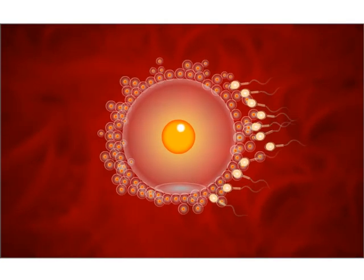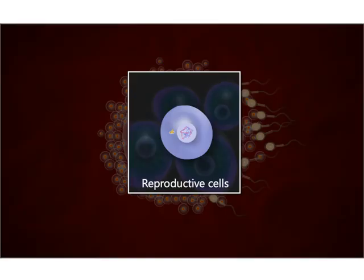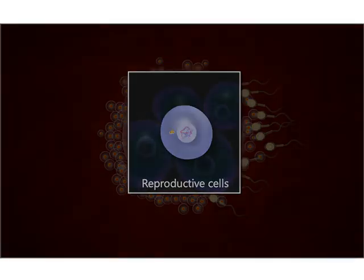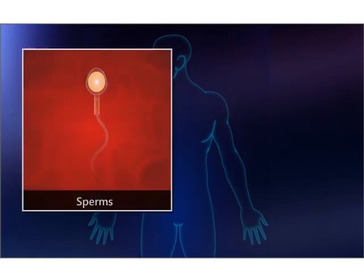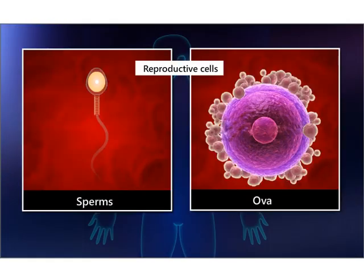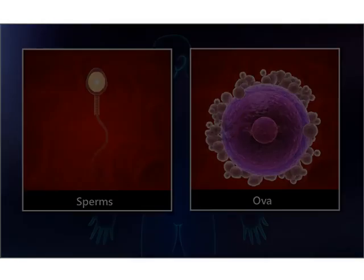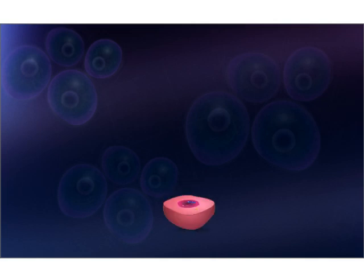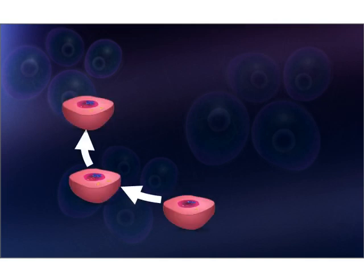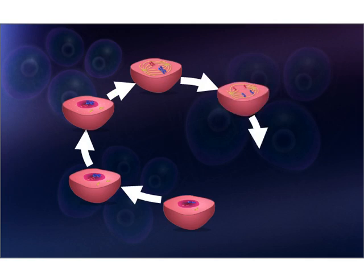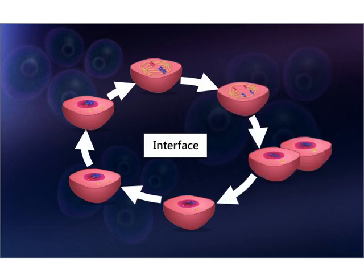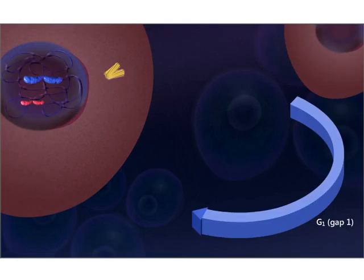Recall how pollen and ovules fuse with each other in a process called fertilization. They are included in the second type of cells: the reproductive cells. In human beings, sperms and ova are the reproductive cells. When a cell is ready to undergo division, it has to go through a preparatory stage. This preparatory stage is called interphase.